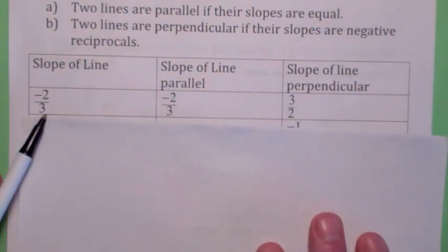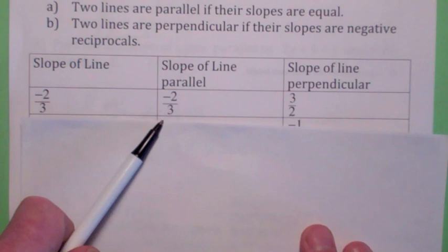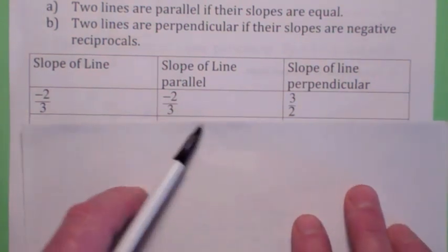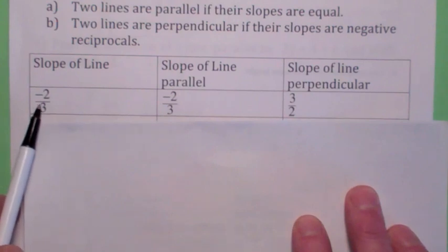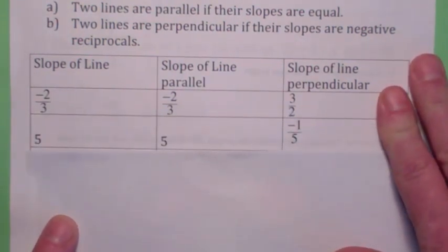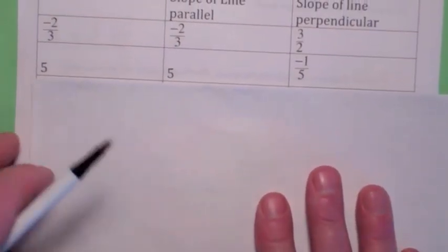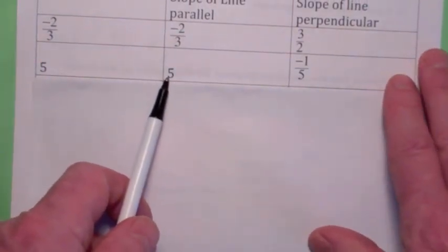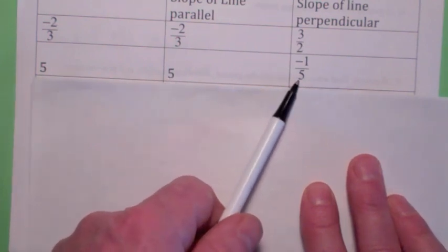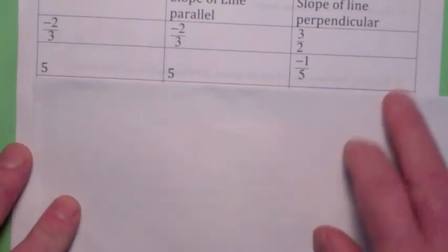And the slope of the line that's perpendicular — you take the reciprocal of it and the opposite — so the slope of the perpendicular line will be 3 halves. If the slope of your line is 5, then the line that's parallel will also have slope 5, and the slope of the line that's perpendicular — you take the reciprocal and the negative — so you get negative 1 fifth.